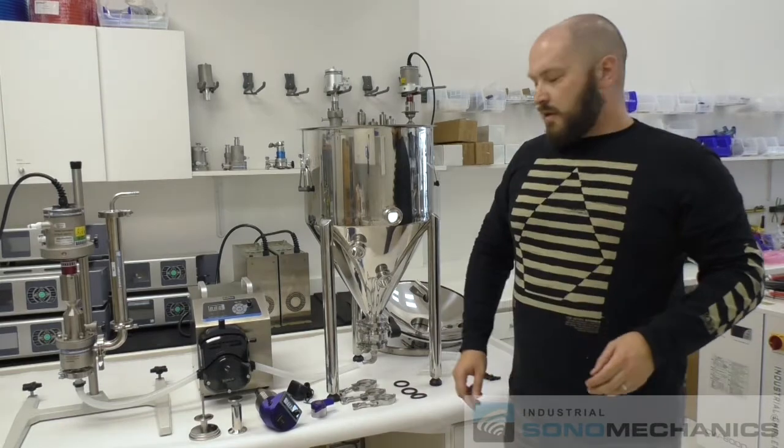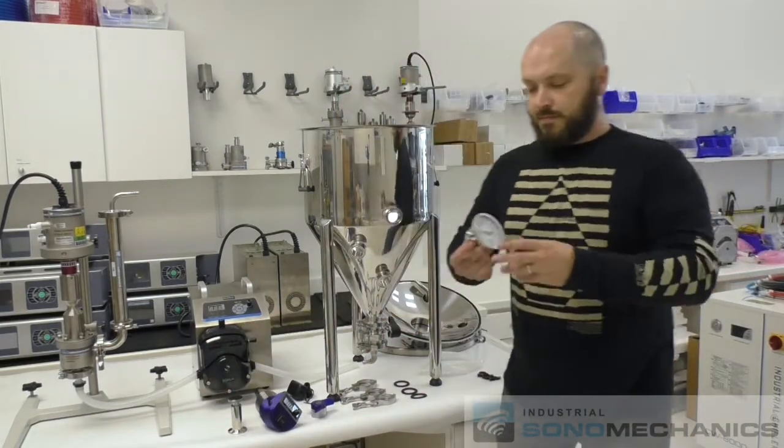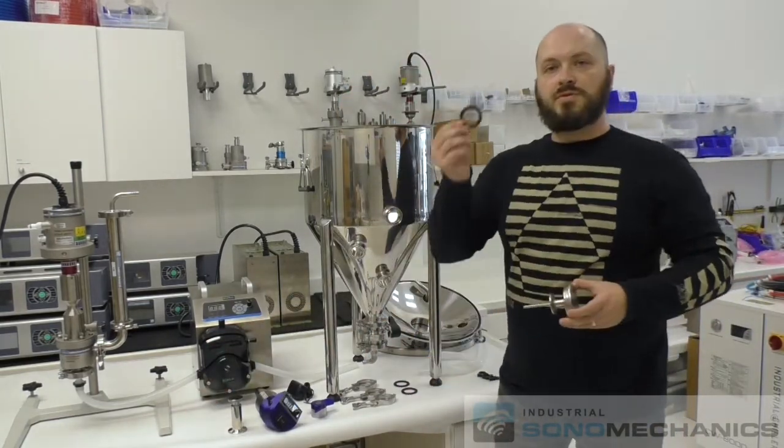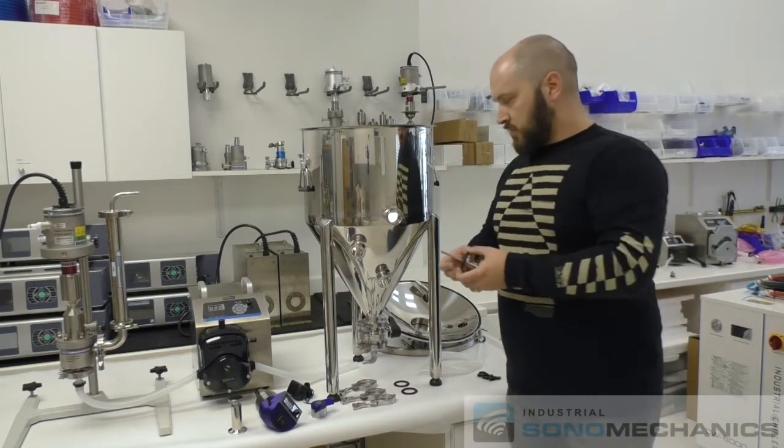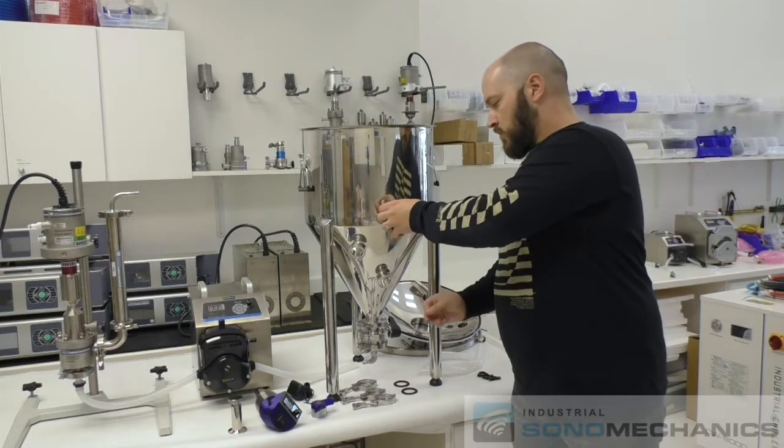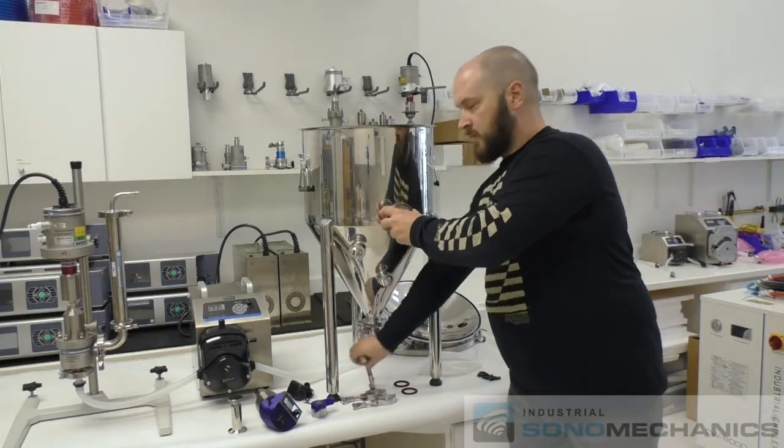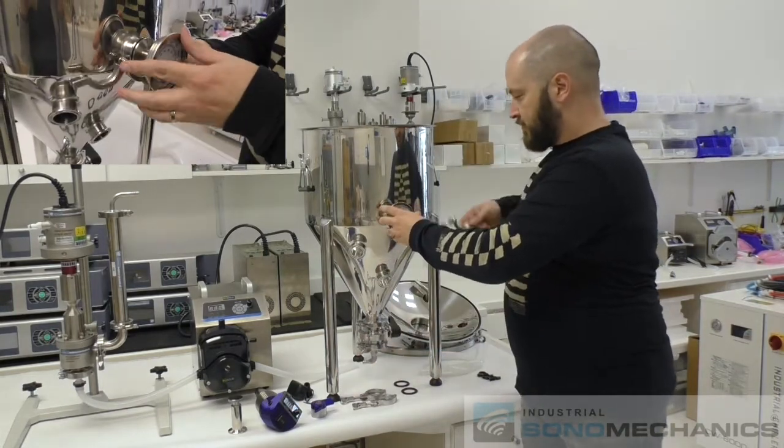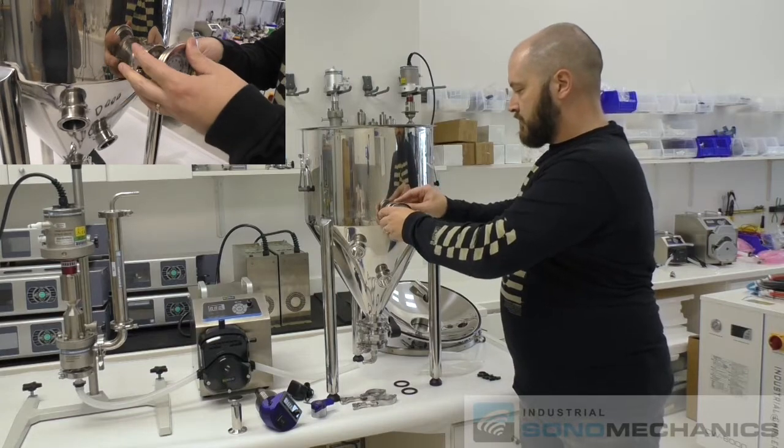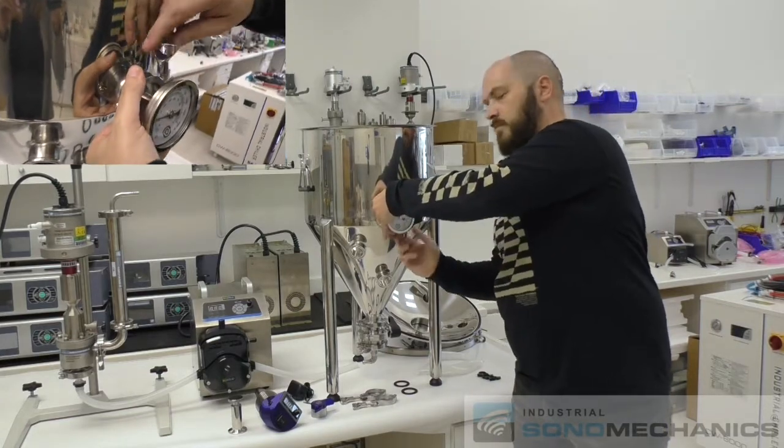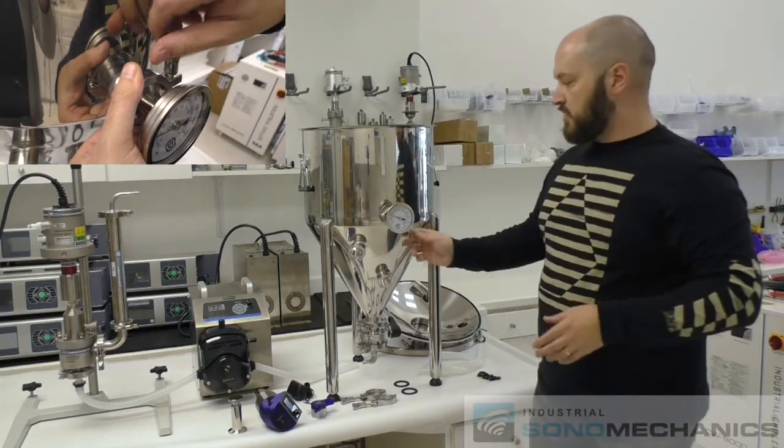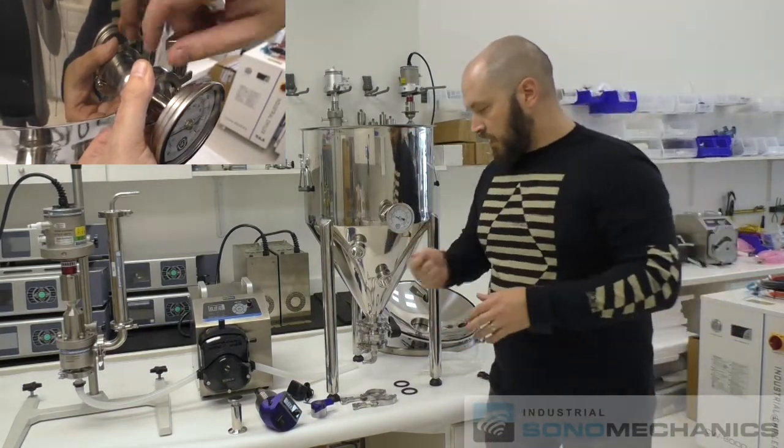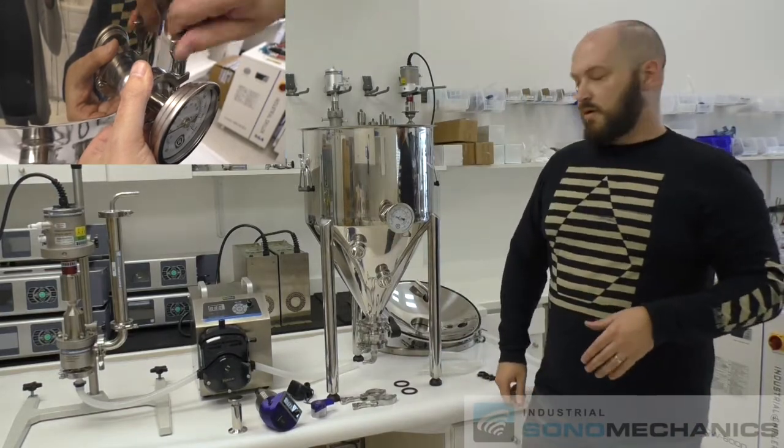So first we're going to assemble the analog thermometer. We always need to use sanitary gaskets when we're assembling these parts. So we'll align it here, grab a clamp, we tighten, and don't over tighten, just a few turns until you feel it's firm are enough.